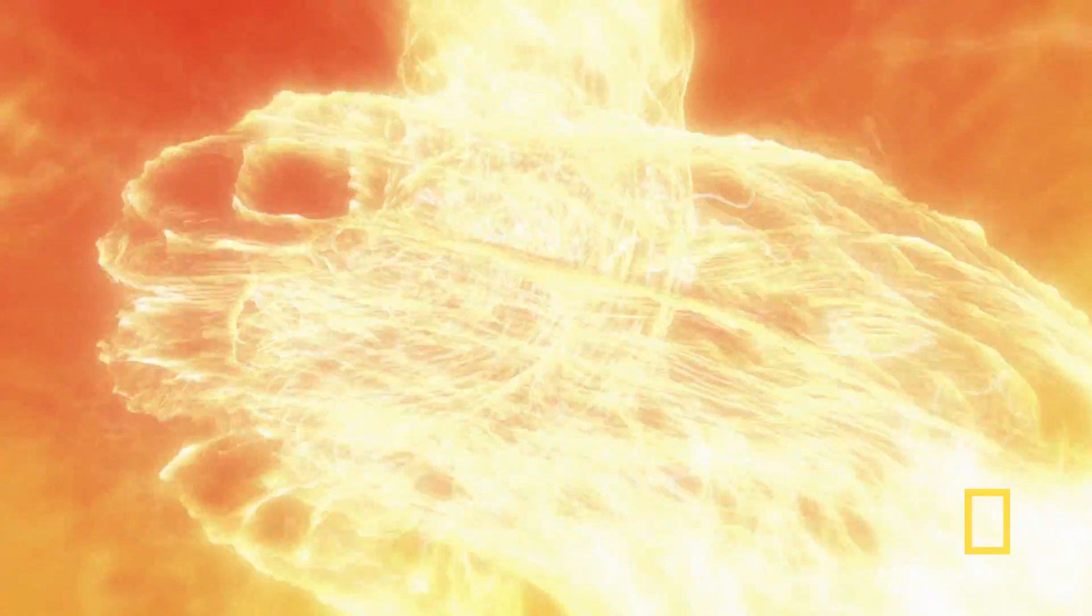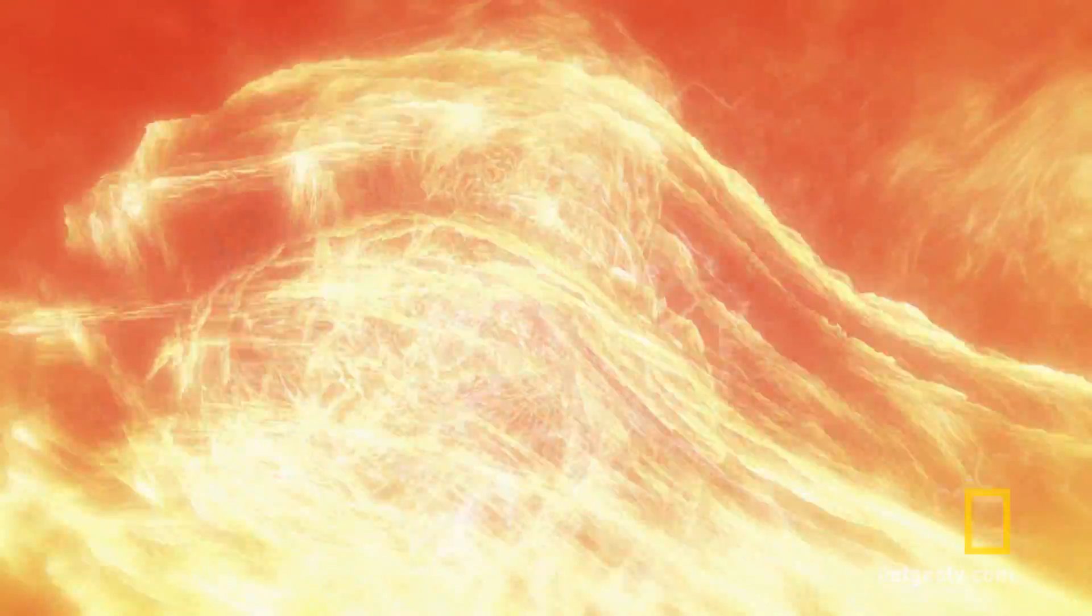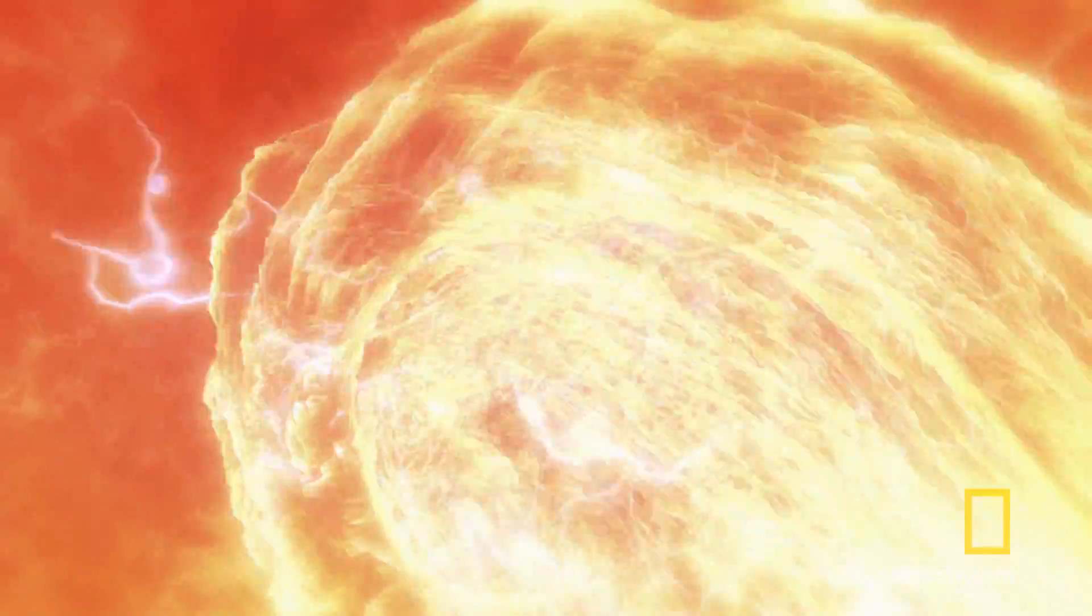It's 4,000 degrees down here. Such heat creates these columns of hot metal. Then the Earth's rotation twists the columns into giant tornadoes.